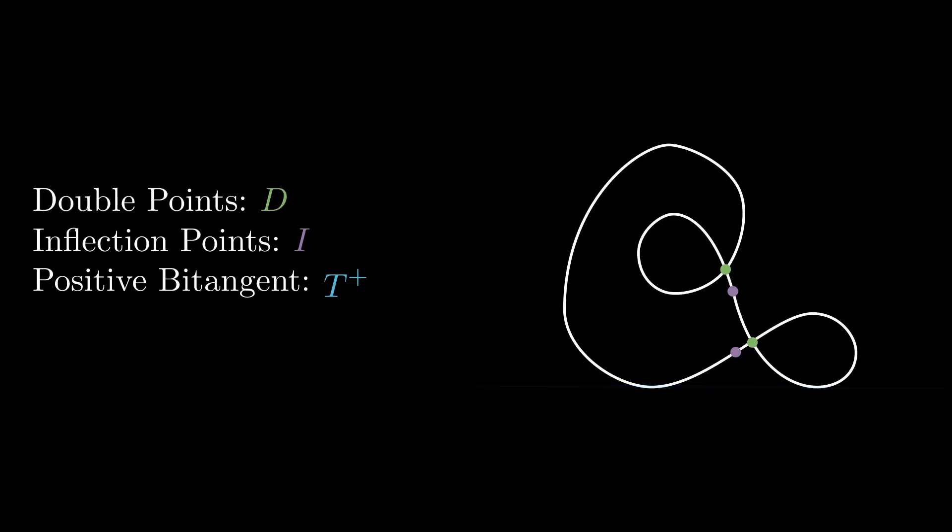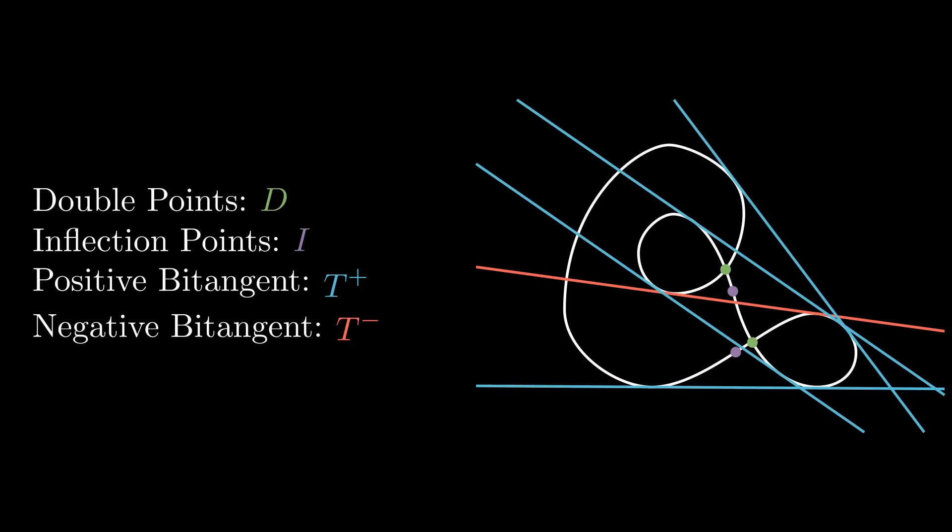We could also draw a bitangent where the points of tangency touch on opposite sides of the curve, and in this case, you guessed it, we'll say that this is a negative bitangent, or T-minus. Here's what the curve looks like with all the bitangents drawn in.